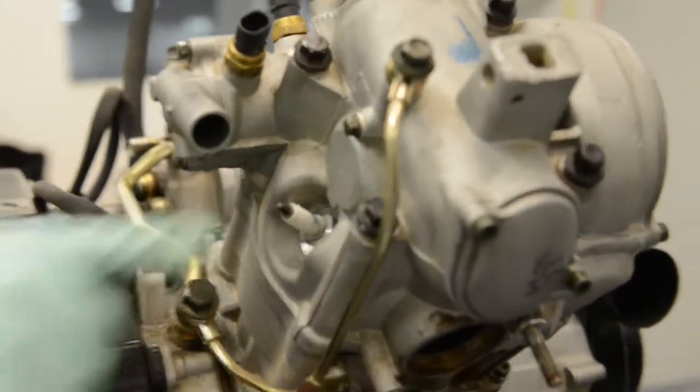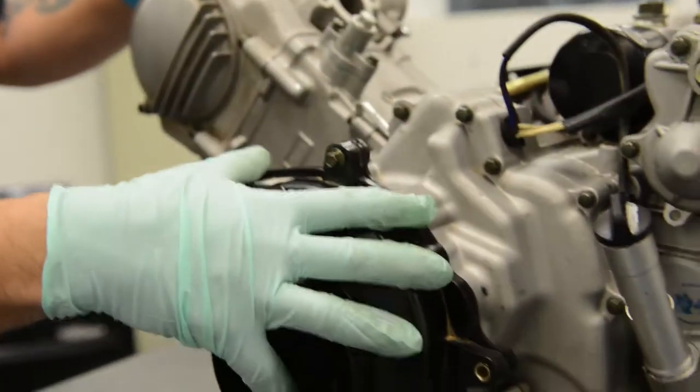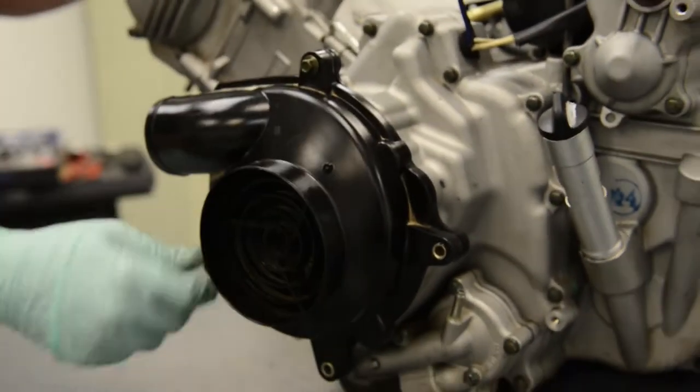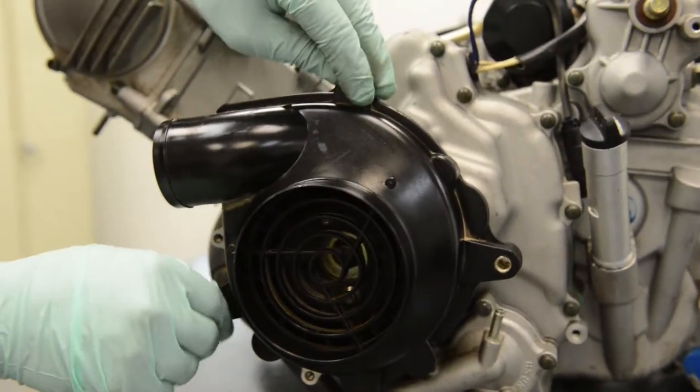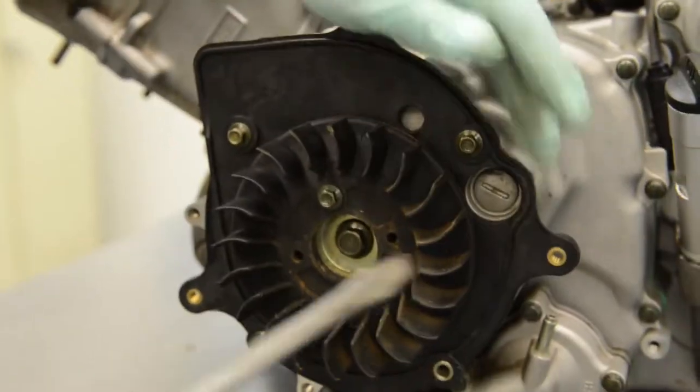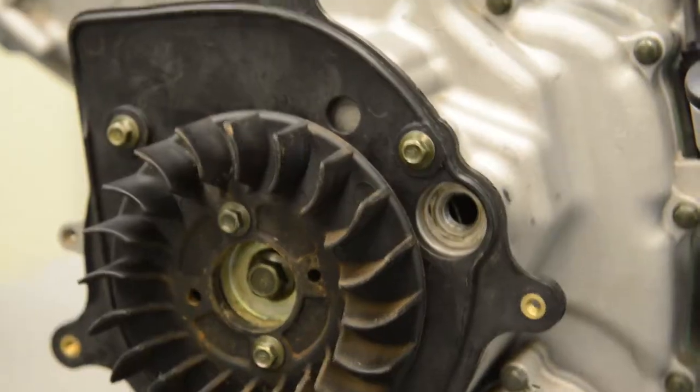Start by removing the spark plug. You'll remove the clutch fan so you'll have access to check the timing marks. There's four 10 millimeter bolts. Once you remove that you'll find a flathead screw in the upper right head corner.